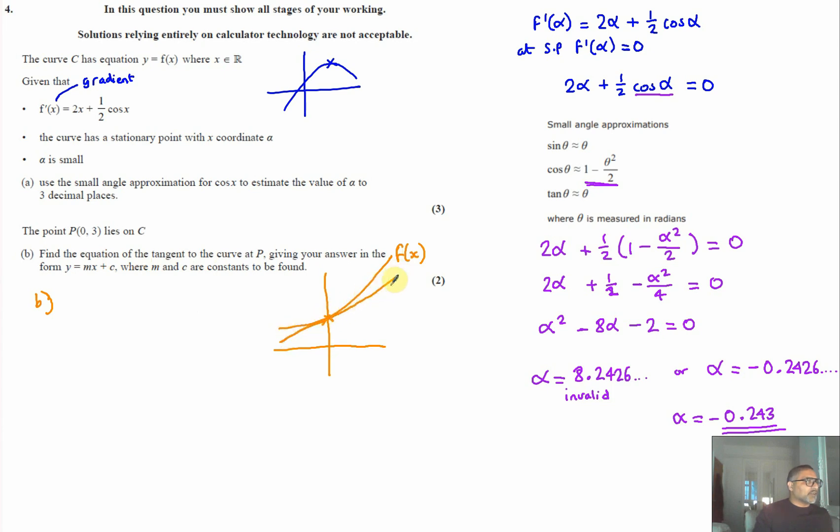The whole point of differentiating, or finding f dash of x, is to work out the gradient function. We know when x is 0, we want to know what the gradient is at that point. We know that f dash of x is 2x plus half cos x. When x equals 0, f dash of 0 will be 2 times 0 plus a half cos 0. That cancels out, and we're left with a half times cos 0 is 1, so it's just a half. That is our gradient.